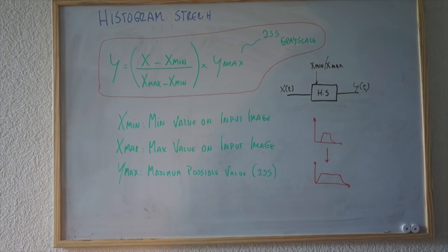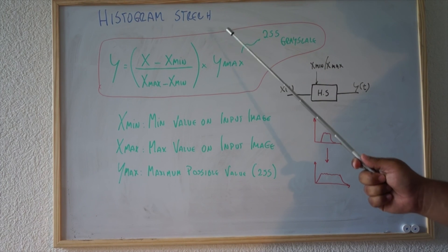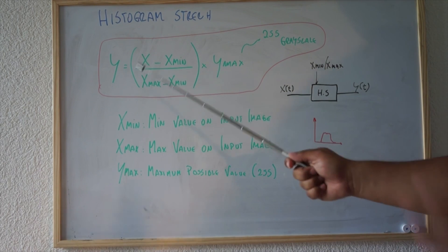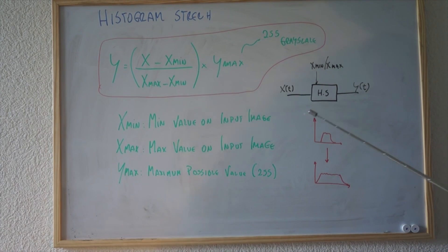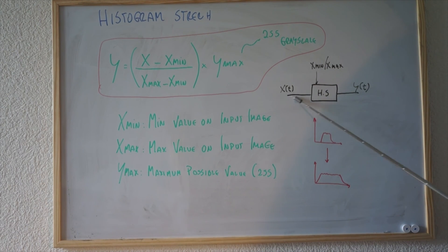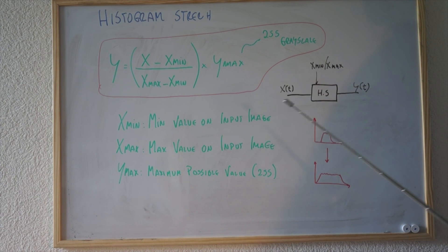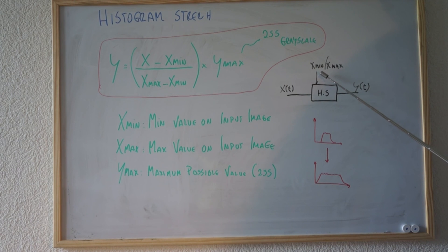So, histogram stretch. This is one of the algorithms that basically improves the contrast of your image. The histogram stretch algorithm has as inputs X(t), which are the pixels arriving in the stream of the image, and Y(t), which are the contrasted pixels on the output image. The parameters are Xmin and Xmax, which represent the minimum and maximum values in the input image.